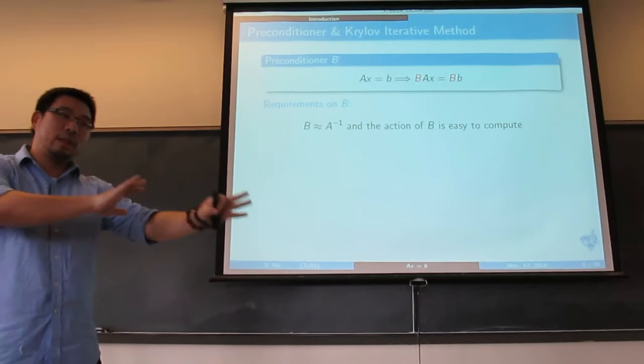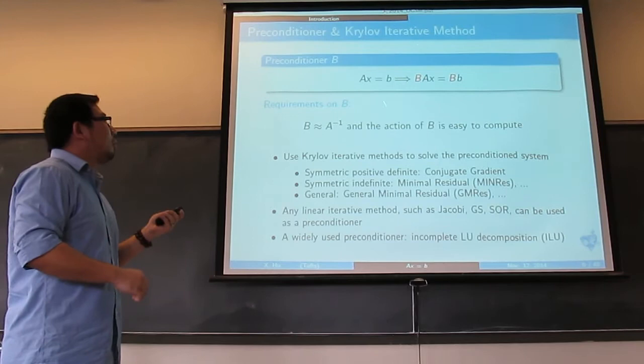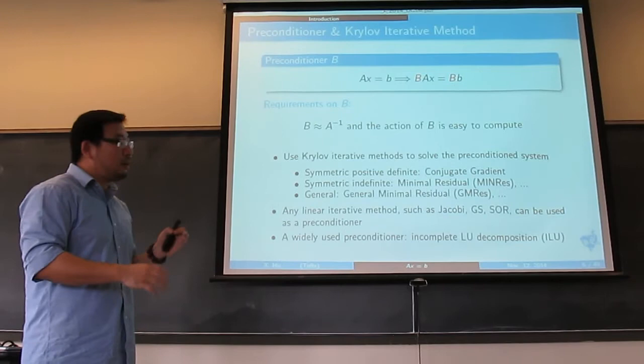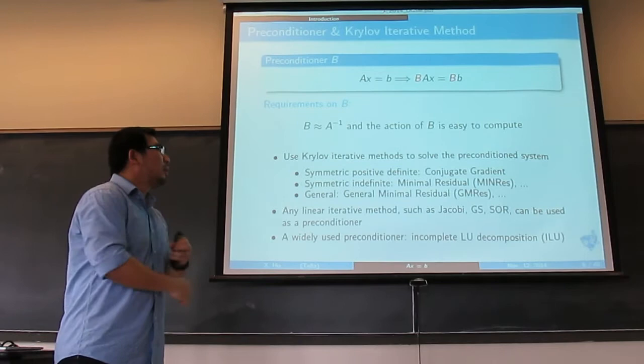Again, the choice of B is a compromise between A inverse and identity. Usually what we do is after we multiply B on both sides and get the preconditioned system, we use something called a Krylov iterative method — another kind of iterative method where you're basically minimizing some quantity in a Krylov subspace.